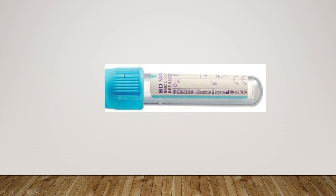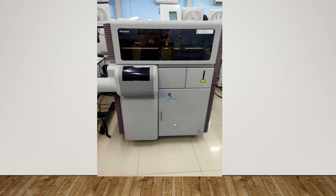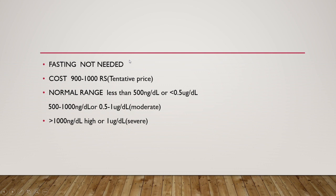For the D-dimer test, blood is collected in a citrate tube — a blue color tube — and processed on a coagulation machine. The test typically costs around 1,000 rupees. Normally, the D-dimer value should be less than 0.5 micrograms per deciliter (or less than 500 nanograms per deciliter). In moderate severity disease, it can come up to 1 microgram per deciliter, and in severe disease, it can go above 1 microgram per deciliter.